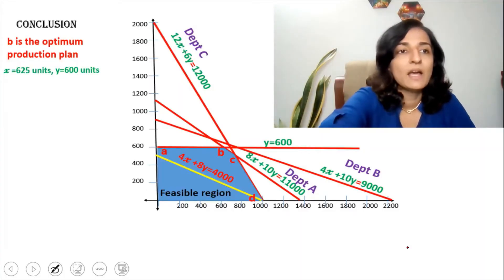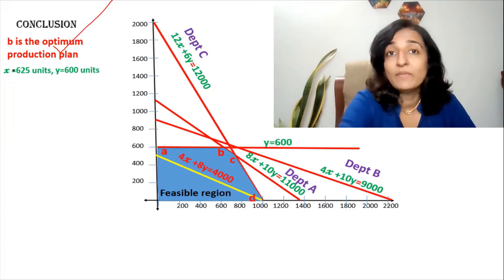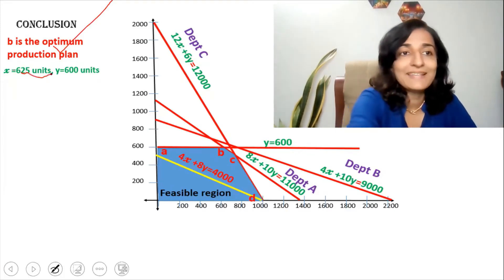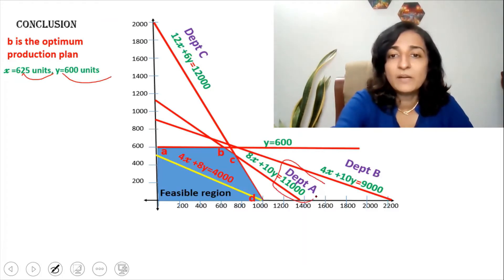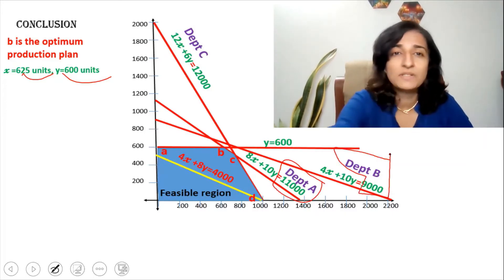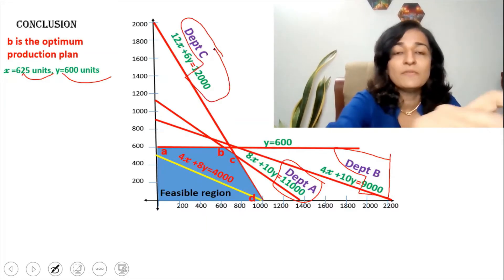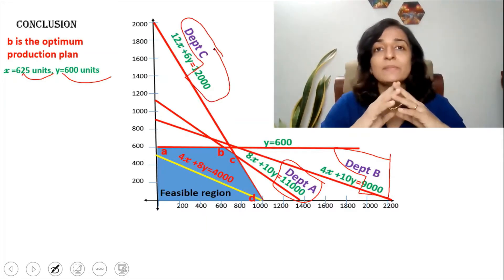Please note that this is a continuation of the previous class. Those who have not watched the previous videos on linear programming are requested to watch those first. Coming back to the optimum production plan found in the previous class: our optimum production plan was point B, where we were producing 625 units of X and 600 units of Y. The limiting factors were: department A restricted to 11,000 hours, department B to 9,000 hours, and department C to 12,000 hours.